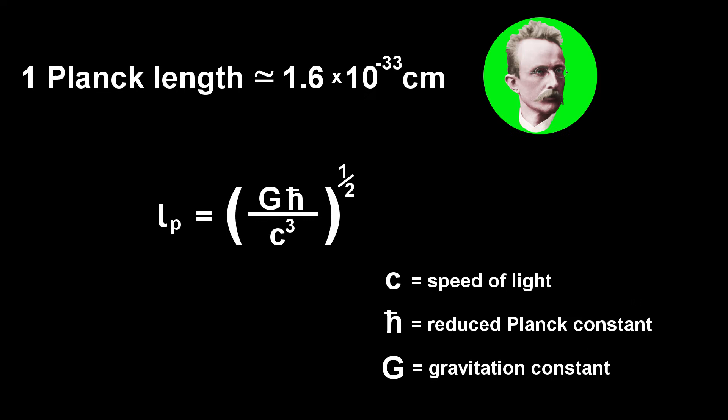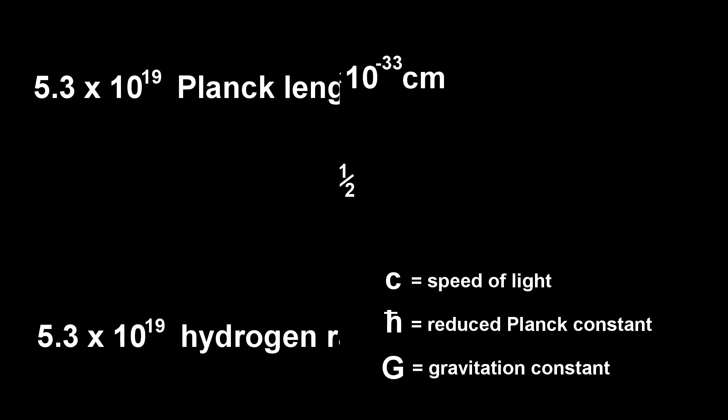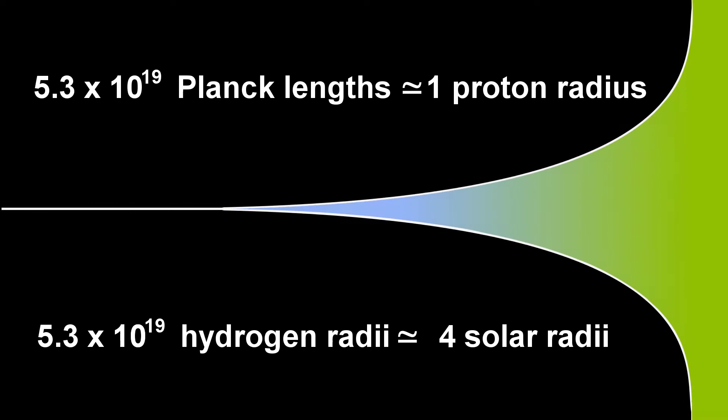One unit of Planck length is about 10 to the negative 33 centimeters. The Planck length measures an almost shockingly small scale. The Planck length is to a proton, as a hydrogen atom is to a star.